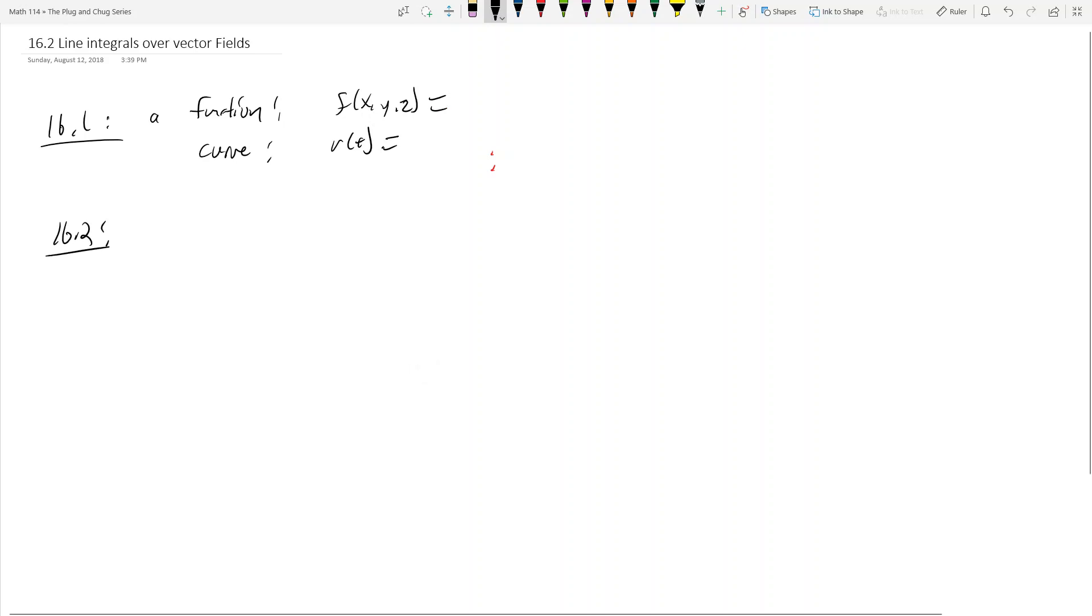Instead, we have a vector field, alright? And it's still f, but now it's a big F. And this big F is going to equal something, something, something. It's a vector field, so it's a vector, right? This is a vector, while in a function, right? This was a function. So here, that's how it's fundamentally different. And pretty much 99% of the integrals you're going to do from here on out are going to be over a vector field.